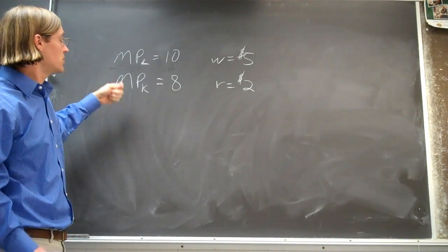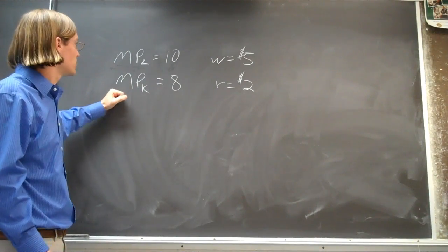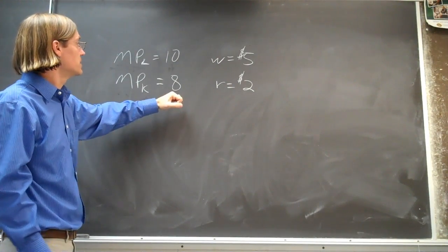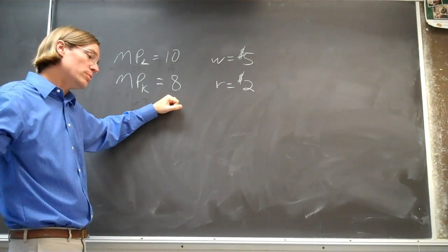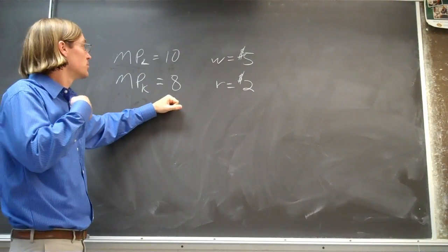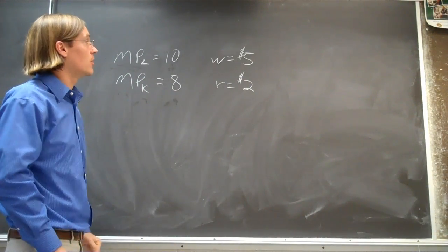If you were to employ another unit of capital, the marginal product of capital is 8. So you're using one more machine, that machine is going to produce 8 more units of output.